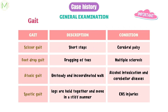Scissor gait is seen in patients with cerebral palsy, where they take short steps. Foot drop gait is seen in patients with multiple sclerosis, where they drag their toes. Ataxic gait is seen in alcoholic intoxication and in cerebellar diseases. In this type of gait, the patient has an unsteady and incoordinated walk.